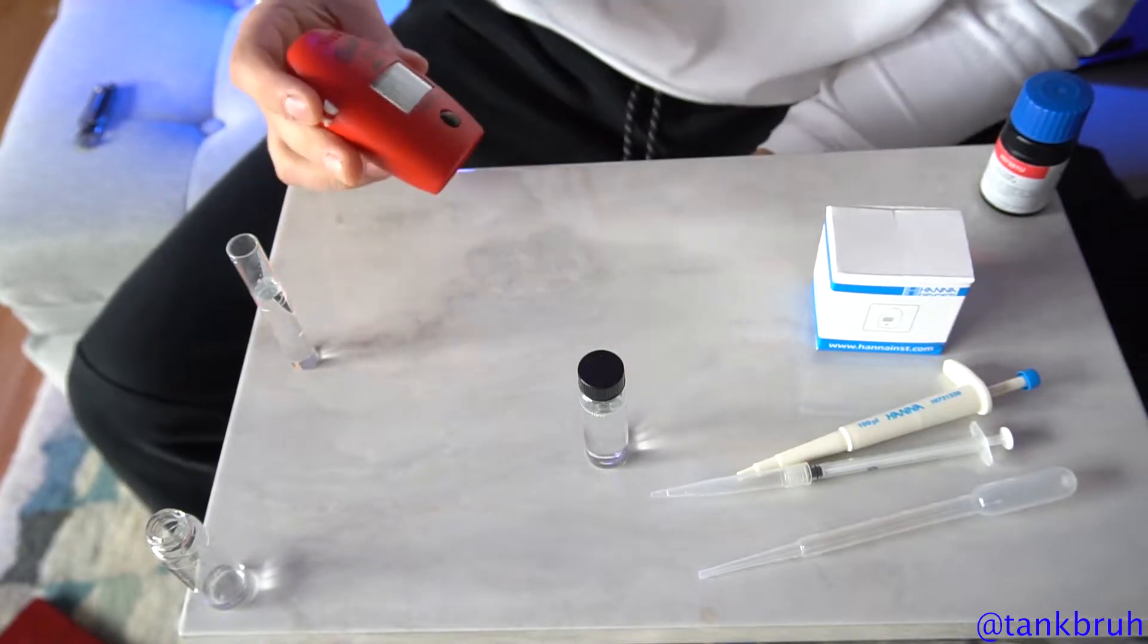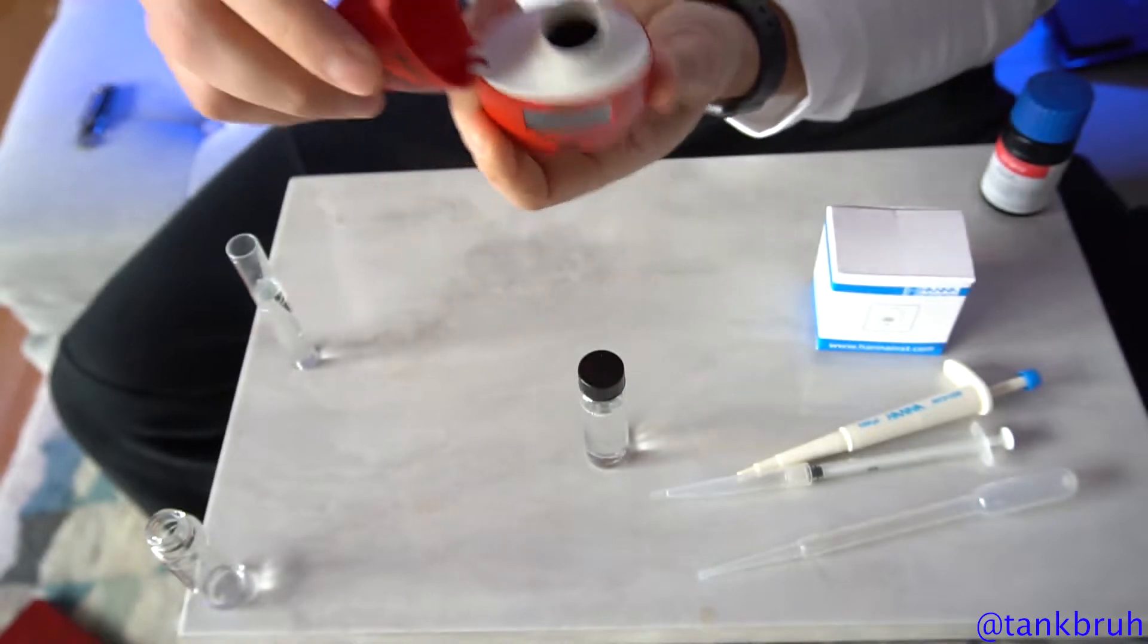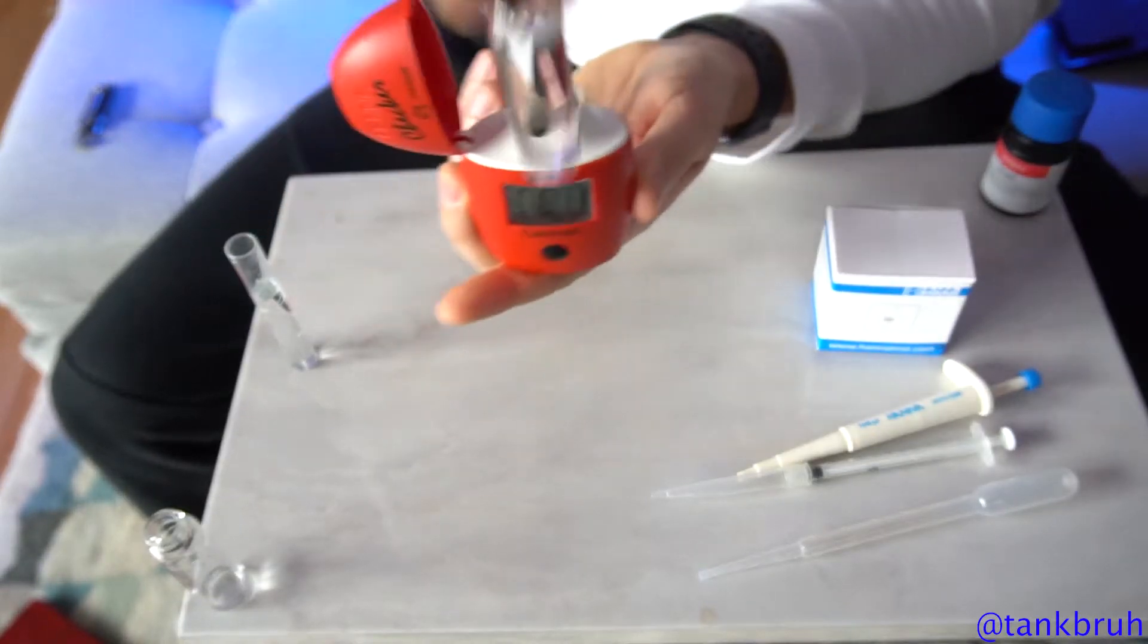All right, once we've waited a little bit of time, we can go ahead and open up your Hanna checker. Just pull that up. Obviously, it's gonna be empty. Place your test tube in there.